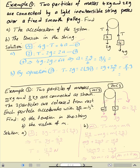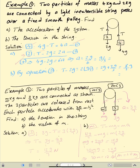Now write the equation of motion for the 2 kg particle: T minus 2G equals 2A. To find the acceleration, we add the two equations. So 4G minus 2G equals 2G, and 4A plus 2A equals 6A. Therefore A equals G over 3. In decimals, A is approximately 3.27 metres per second squared.